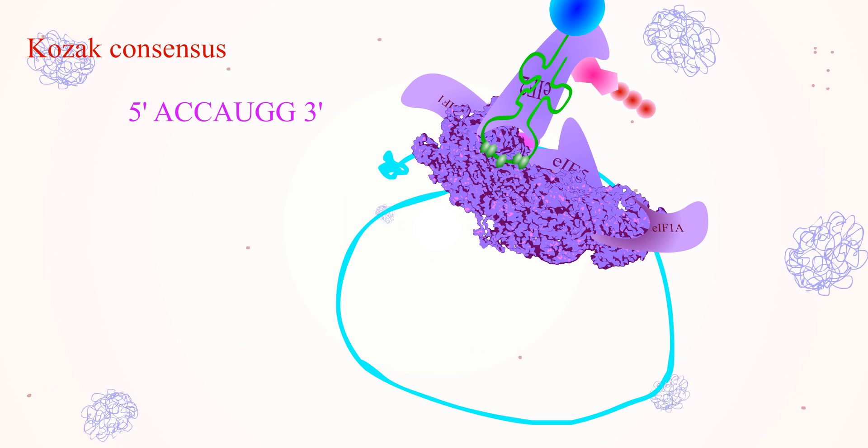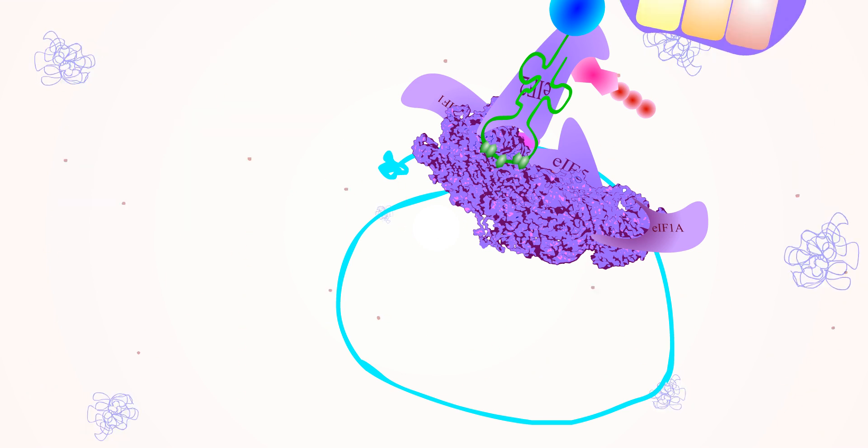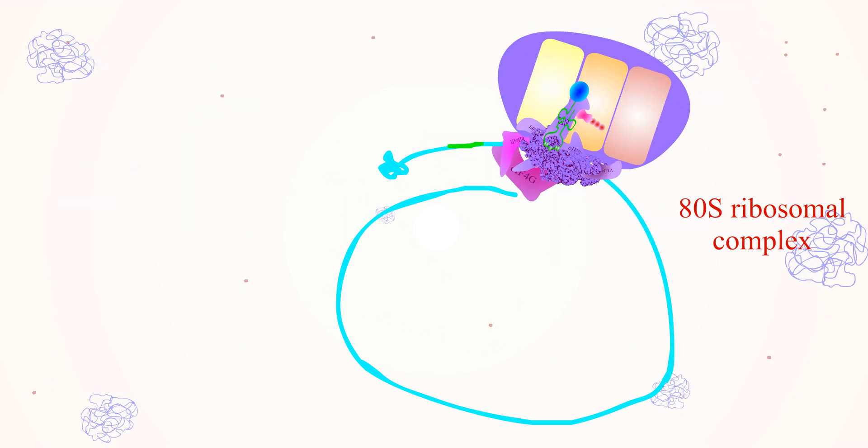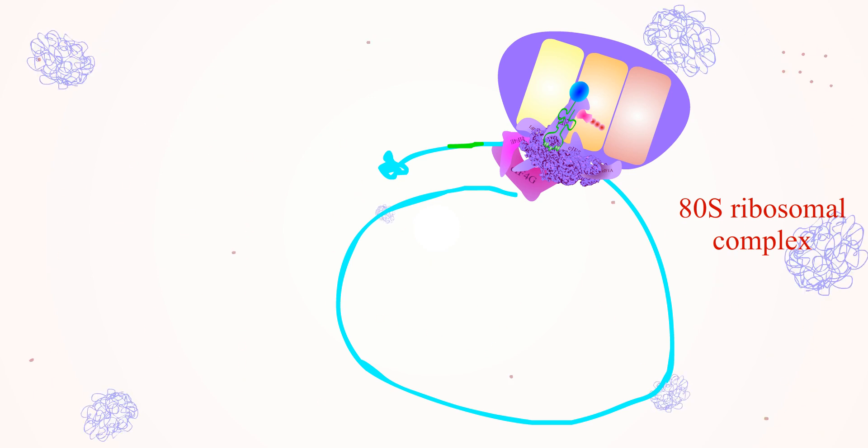Once the complex detects the initiation codon, the 60S ribosomal complex will bind to the 40S ribosomal complex to form the 80S ribosomal complex. With the hydrolysis of GTP, it leads to the release of several initiation factors.